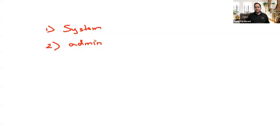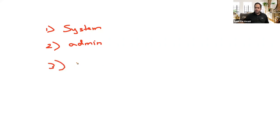Most ASA firewalls have the admin context by default, unless you delete it. Once deleted, you need to recreate it before creating virtual firewalls. The system context and admin context do not count in your licensing. The third type is the custom context — how many virtual firewalls you can create depends on your license. Default is two, but if you need more, you need a license for that.